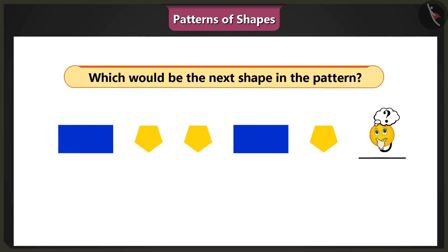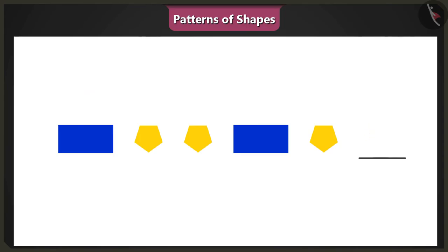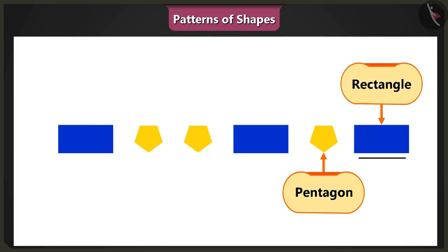Next, in this pattern, a rectangle and a pentagon have been repeated. Therefore, the next shape in this pattern will be a pentagon followed by a rectangle.